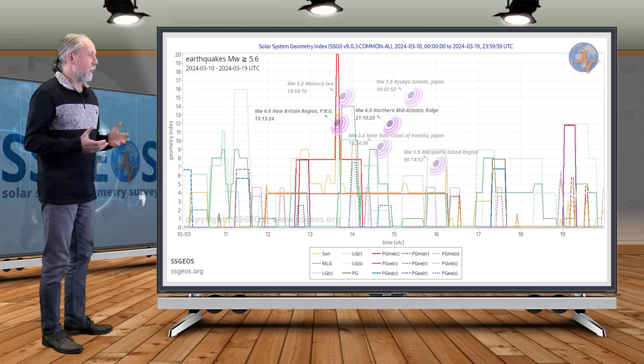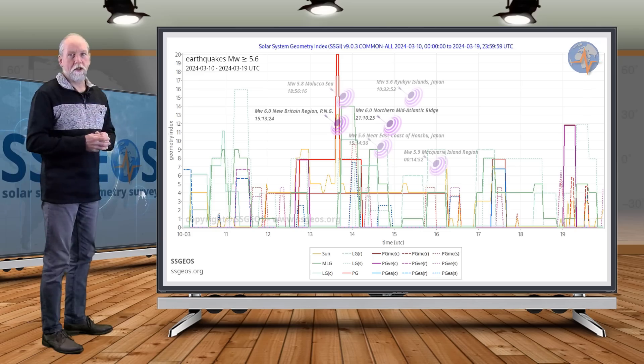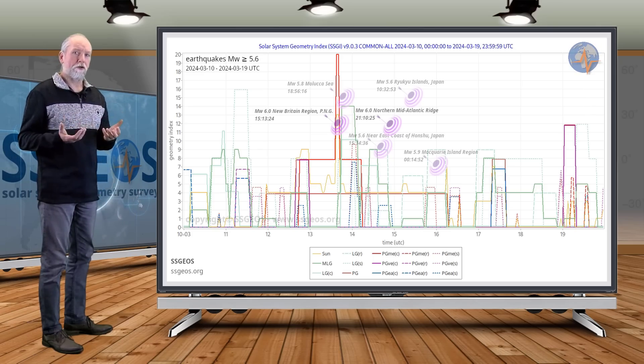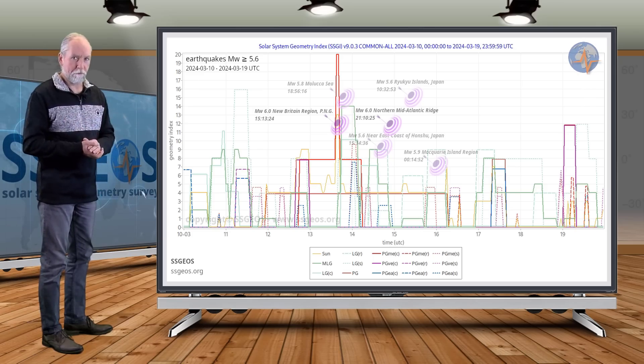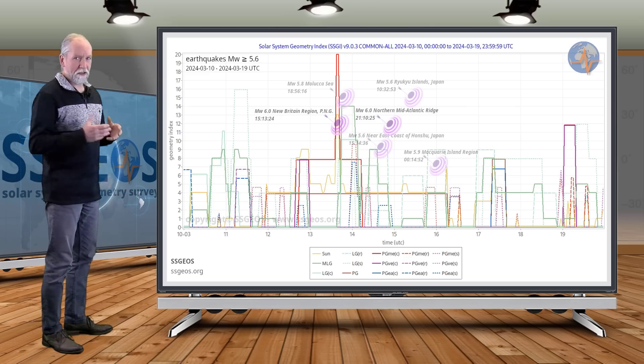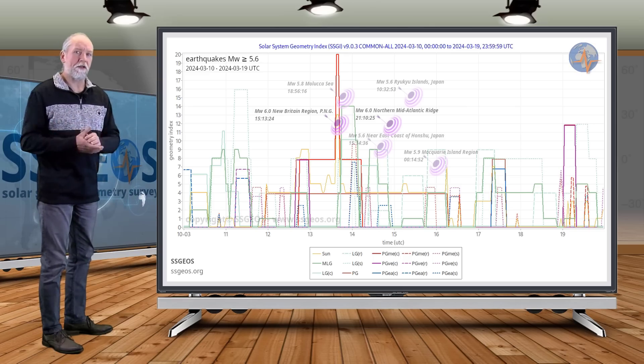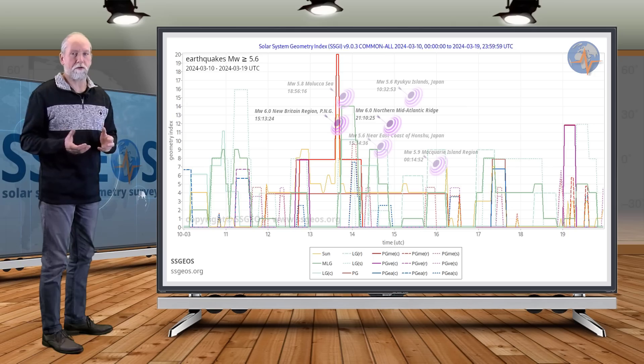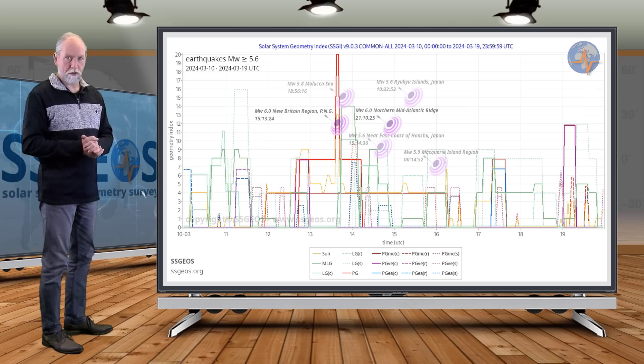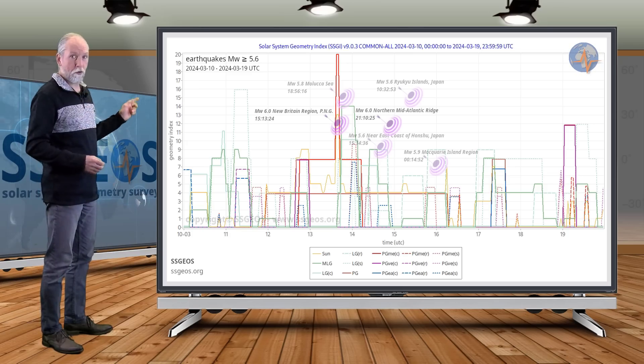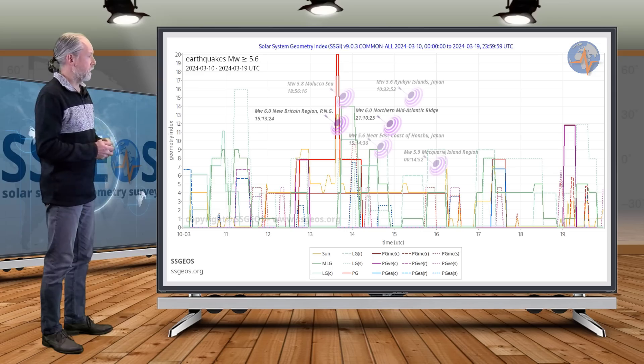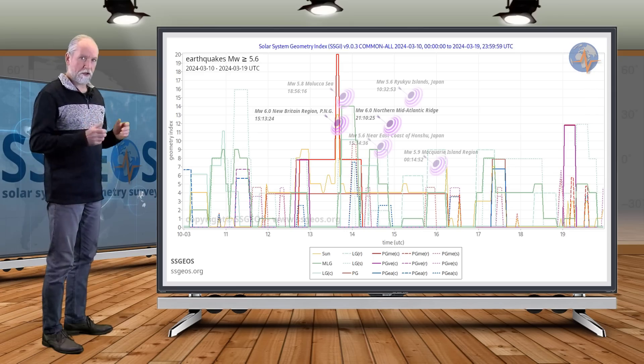So here we see that the critical planetary geometry certainly resulted in a seismic response on Earth, but as I explained in the previous update, it very much depends on the stress levels in Earth's crust how large exactly the seismic activity is going to be. Again, this is magnitude 5.6 and larger and we see this obvious clustering.